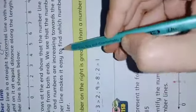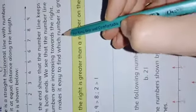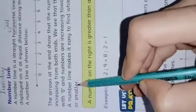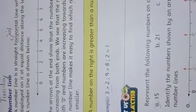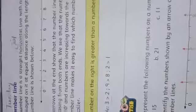A number line makes it easy to find which number is greater or smaller. The number line helps us determine which number is greater and which number is smaller.